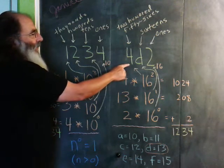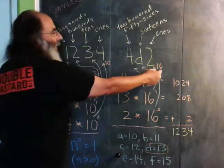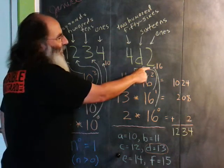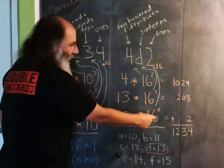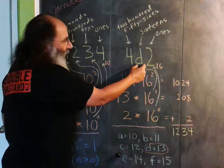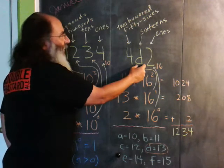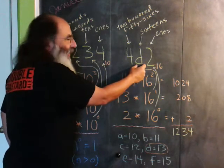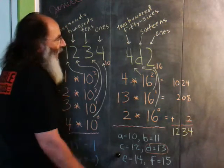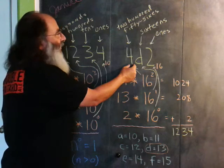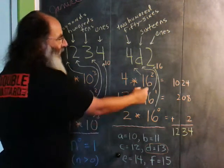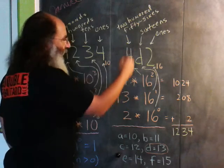Now, if we come over to the number 4D2 in base 16 hexadecimal, the rightmost digit is in the ones, 16 to the zero ones. The D is not in the tens, it's now in the sixteens, 16 to the first power, 16. And the 4 is not sitting in the hundreds. Instead, it is sitting in the 256s. 16 squared is 256.